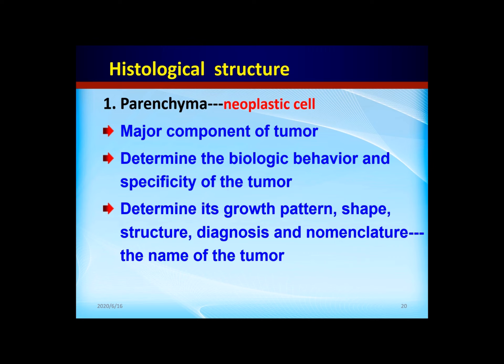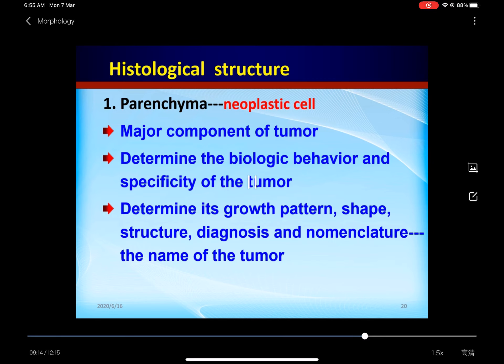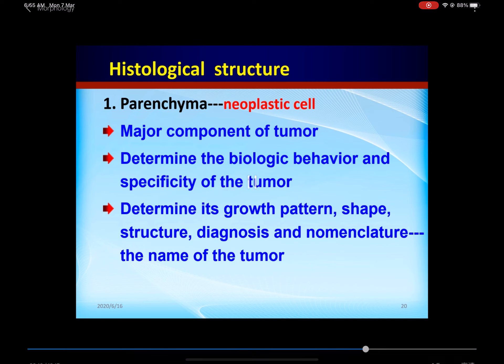Parenchyma determines the tumor's growth pattern, shape, structure, diagnosis, and nomenclature — the name. For example, if the tumor is derived from fat tissue, we call it a lipoma. The neoplastic cell is very similar to — or the same as — the fat cell.